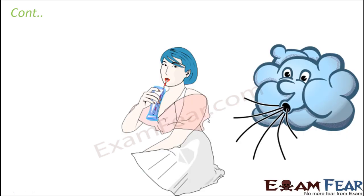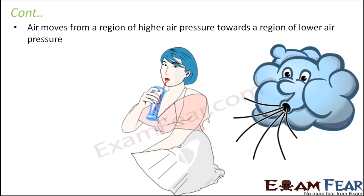Let us try to apply the same concept to this example. As mentioned before, when we suck through the straw, the liquid inside the glass tends to come up through the straw and enter our mouth. Here we will see another interesting concept associated with air pressure — the movement of air happens along the gradient, from a region of higher concentration towards a region of lower concentration.